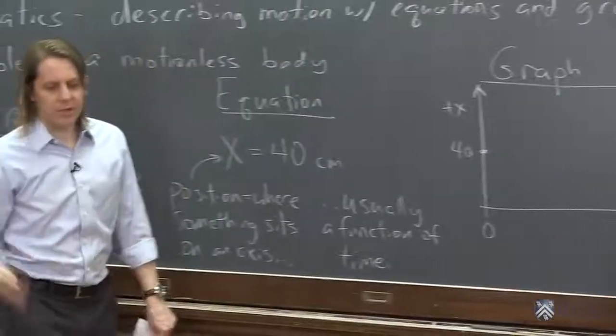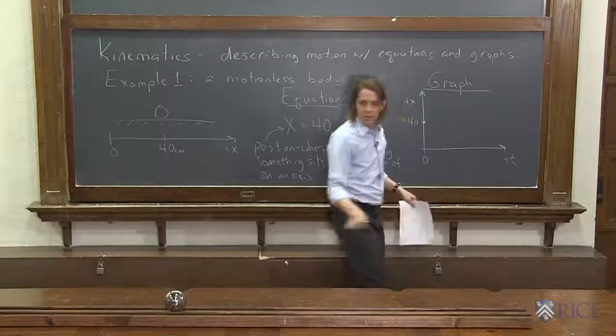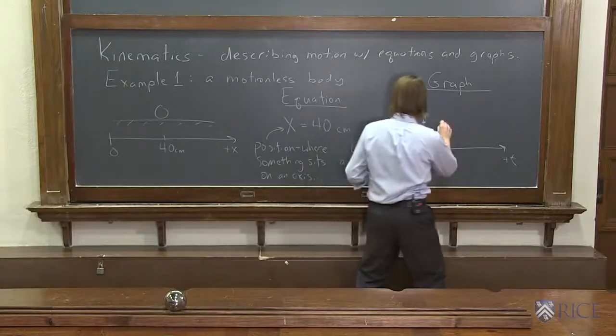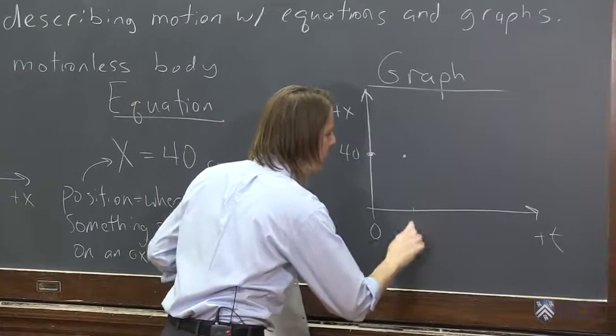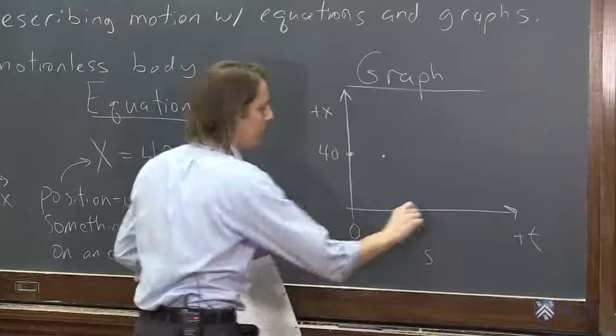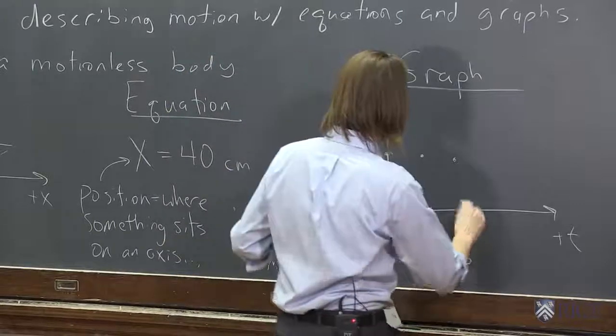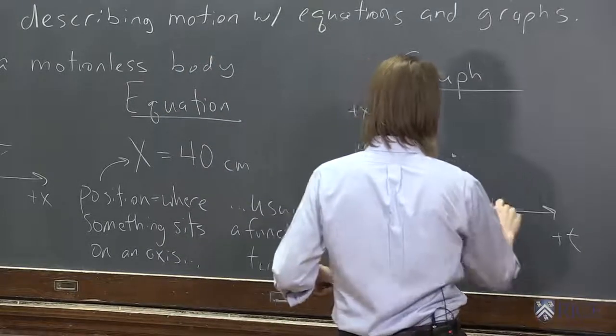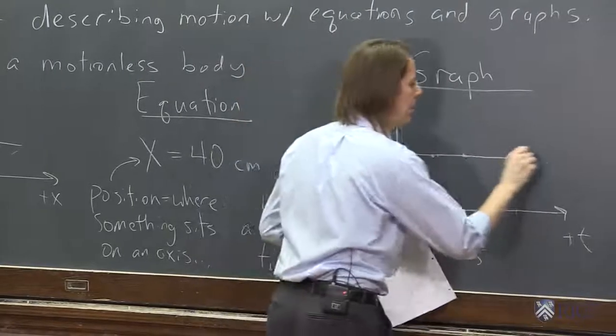We'll wait a few seconds and say, where is it? Still at 40. So we put another plot there. Let me wait a few more seconds. Say this was three seconds. And we waited a few more seconds. And where is it? 40. So these kinematic plots are literally just a plot of what happened. In this case, the position versus time.